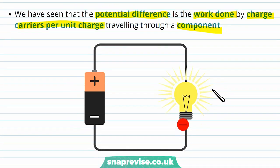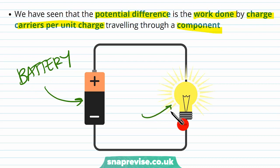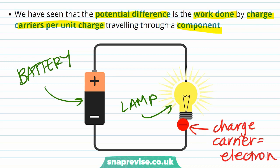For example, here we have a circuit — this is our battery, this is our lamp, and we've got a charge carrier here which in this case is an electron. This electron is moving through this light bulb and it's harder for this electron to pass through the light bulb than it is for it to pass through the metal wires that make up the circuit, so it's going to need to do some work.